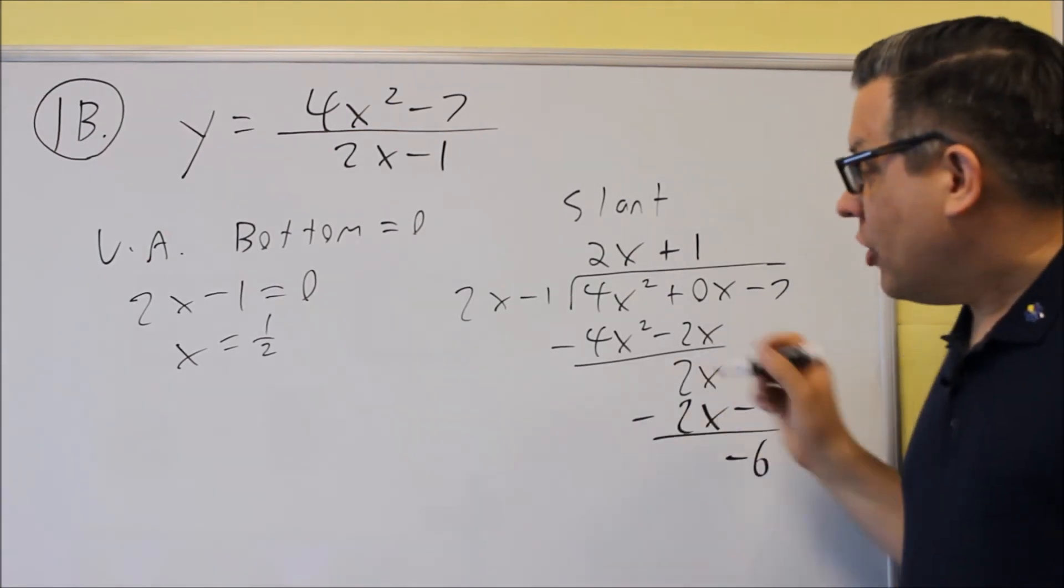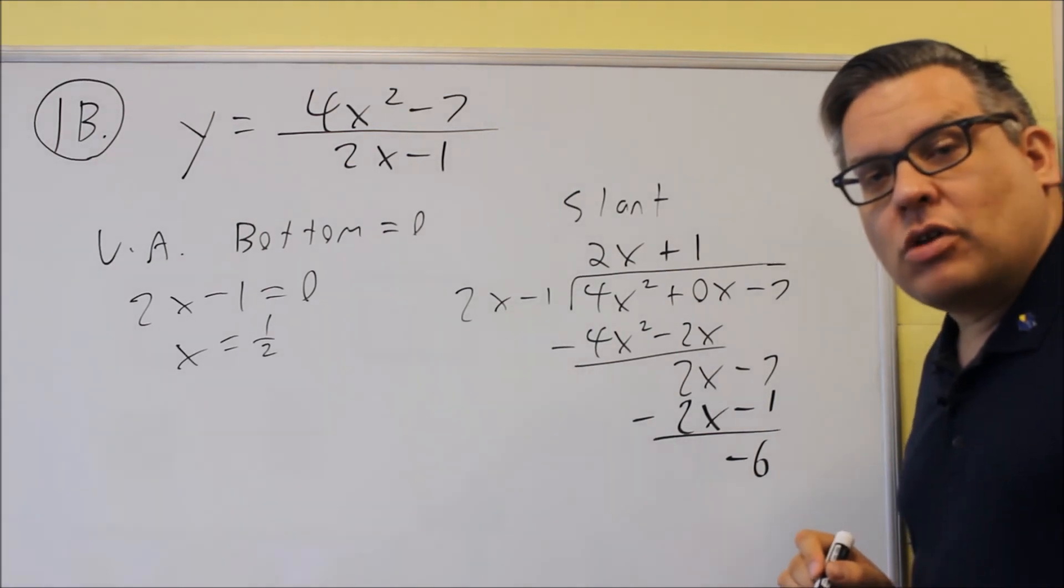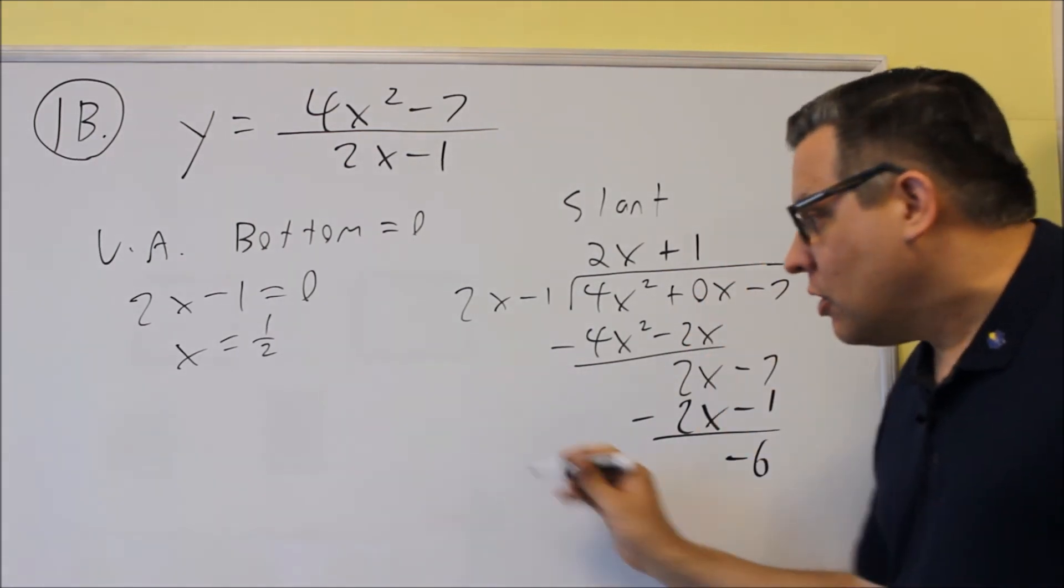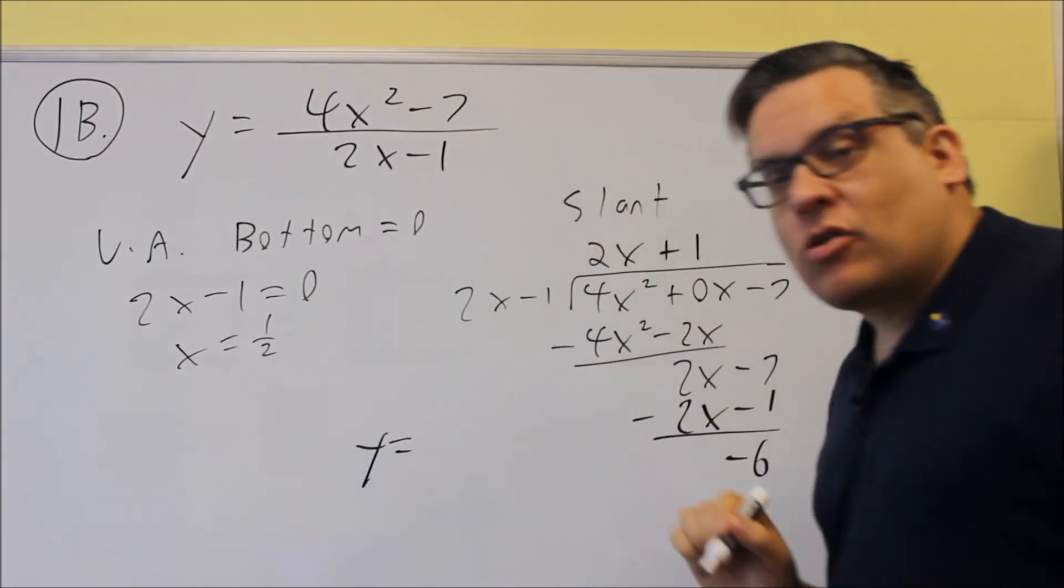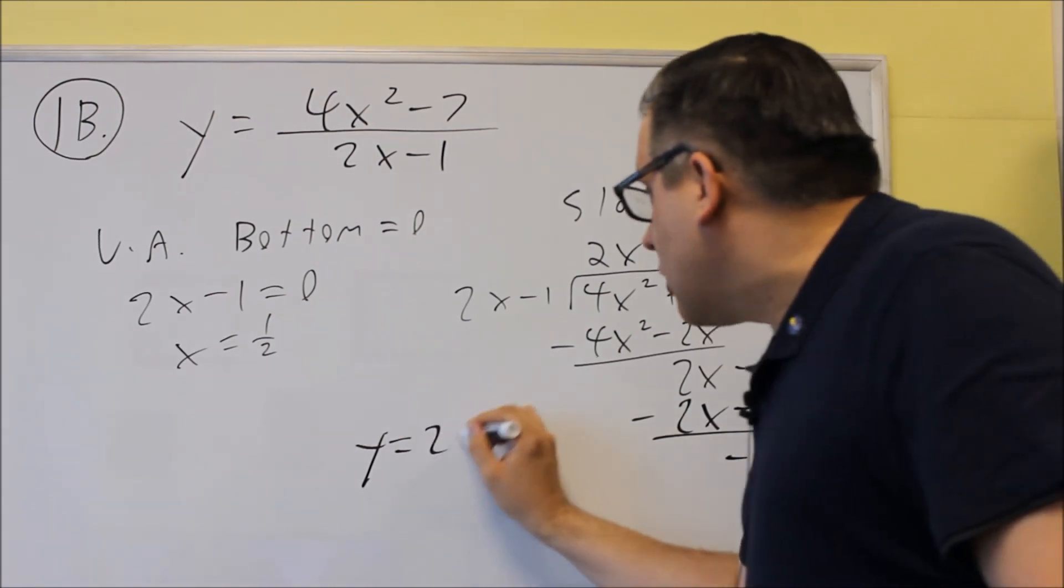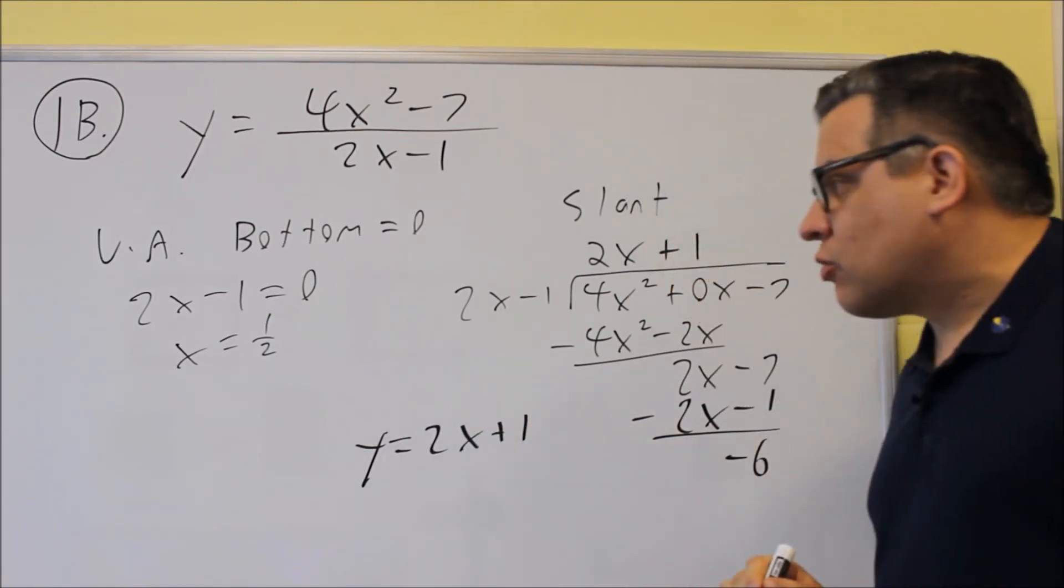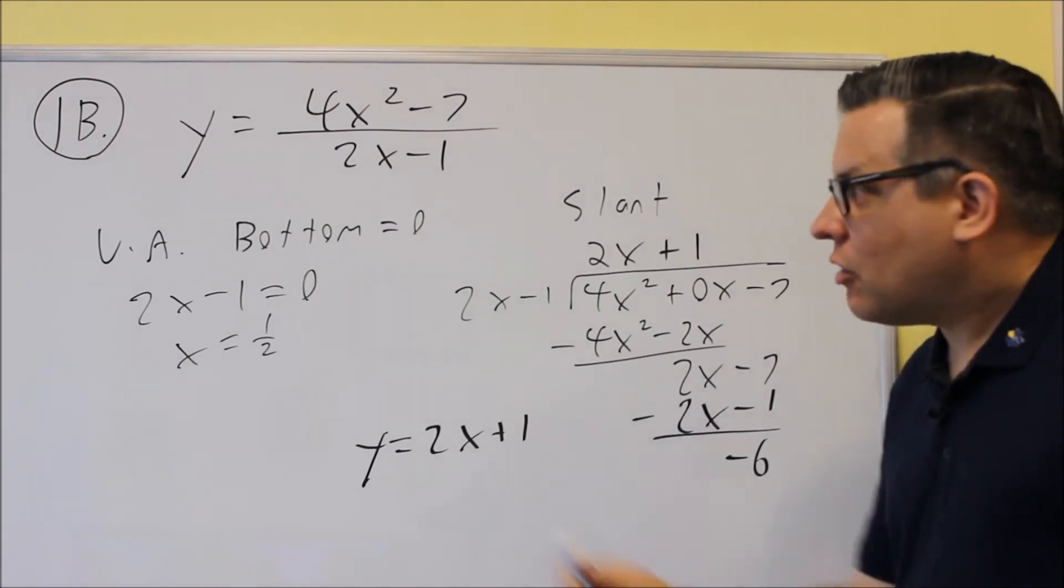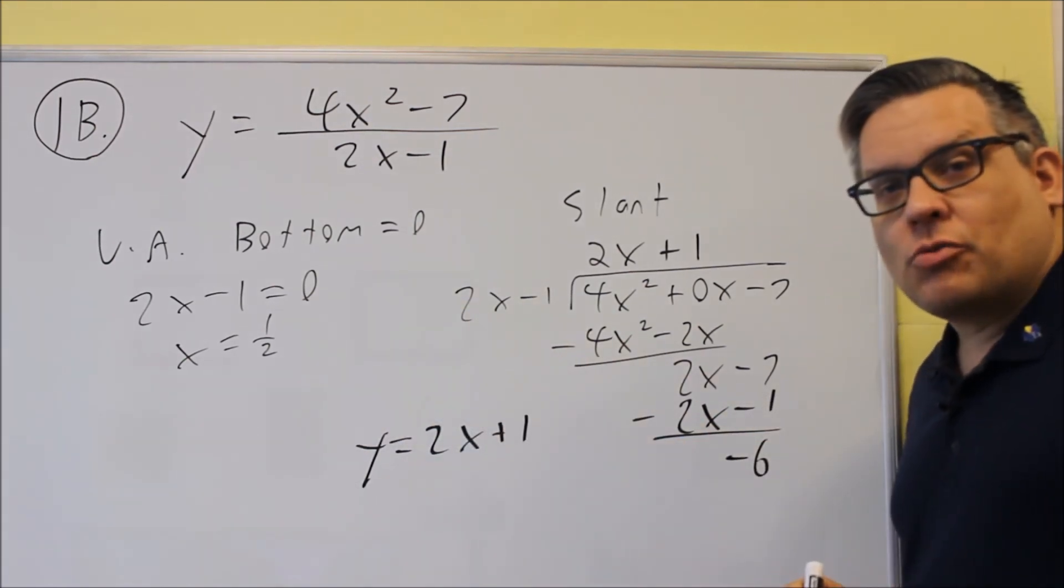So as I mentioned before, we don't use your remainders at all when you indicate your slant asymptote. We're going to make sure you put the y equals there for your answer, and it's going to be y equals 2x plus 1. That's the equation for your slant, and the equation for the vertical asymptote is x equals 1 half.